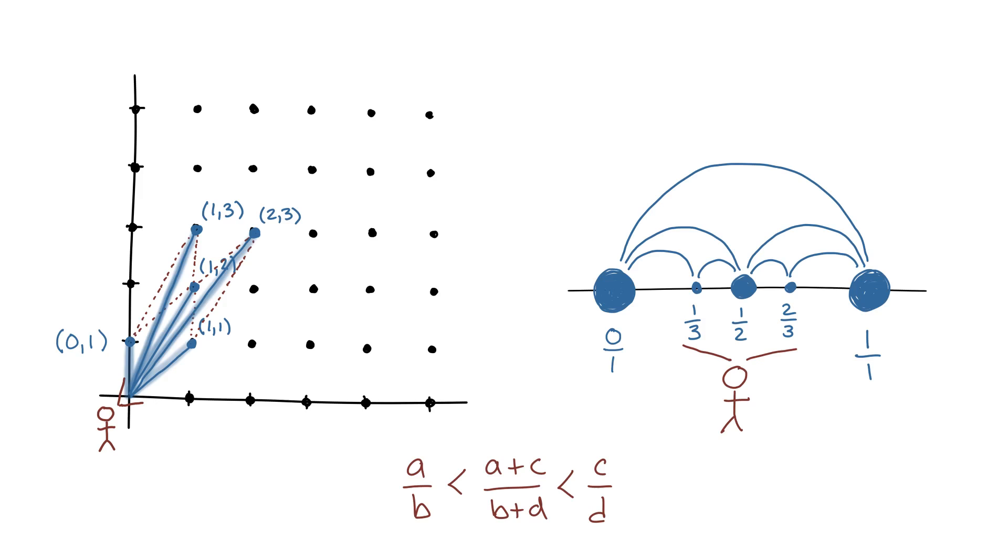When I subdivide using the mediant, that's that special vector sum rational, I'll draw bubbles from the endpoints meeting at the new rational, creating two sub-bubbles. Let's just keep doing this forever.